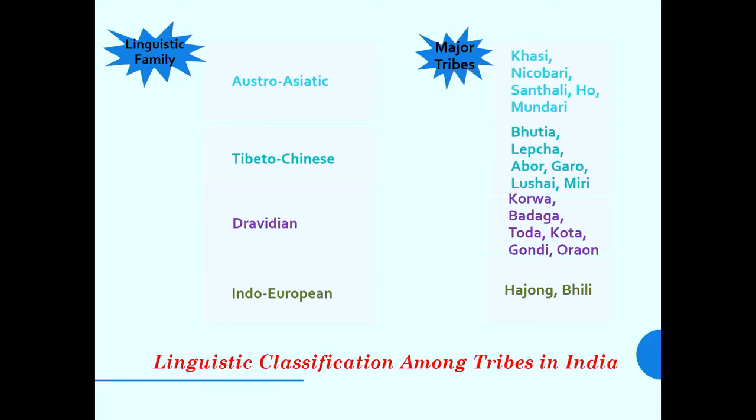There is also a linguistic classification among tribes in India. Tribes are divided into four tribal language communities: Austro-Asiatic, Tibeto-Chinese, Dravidian and Indo-European. Language communities like Khasi, Nicobarese, Santal, Ho and Munda belong to Austro-Asiatic, while Bhutia, Lepcha, Abhor, Garo, Lushai and Miri belong to the Tibeto-Chinese communities.